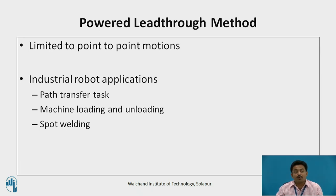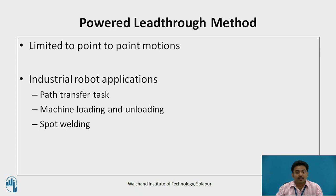A large number of industrial robot applications consist of point-to-point movements of the manipulator. These include parts transfer tasks, machine loading, unloading, and spot welding.